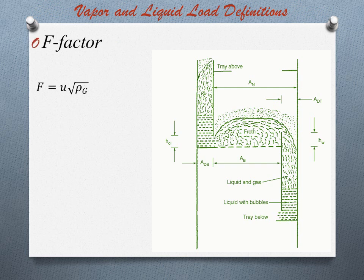Now we discuss some vapour and liquid load definitions. First we take the F factor, which is denoted by F. This is the square root of the kinetic energy of the gas, defined by the equation: F equals U multiplied by the square root of rho-G, where U is the velocity and rho-G is the gas density. The velocity in this equation is usually based on the total tower cross-sectional area AT, the net area AN, or the bubbling area AB. The user should beware of any data for which the area basis is not clearly specified.